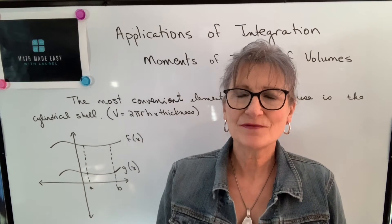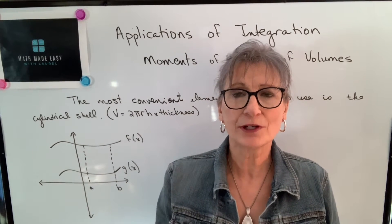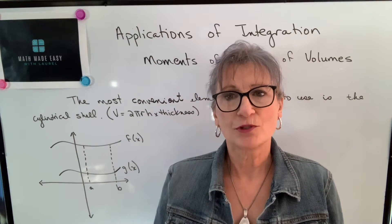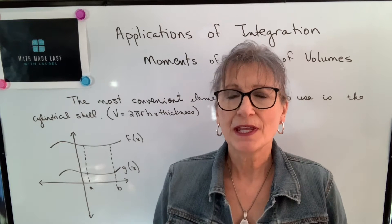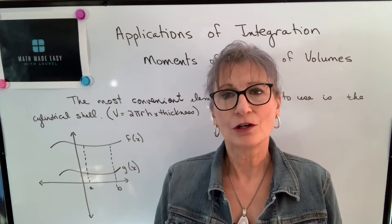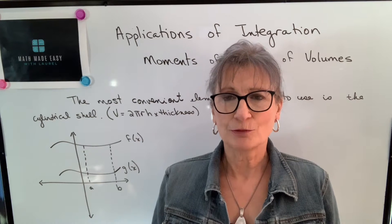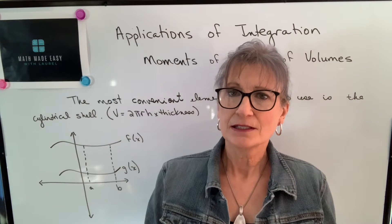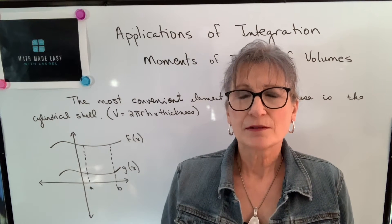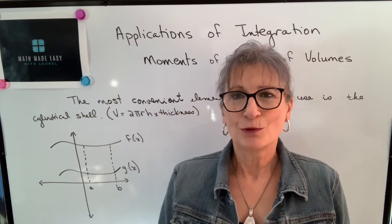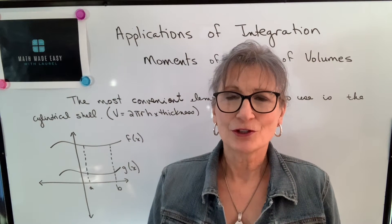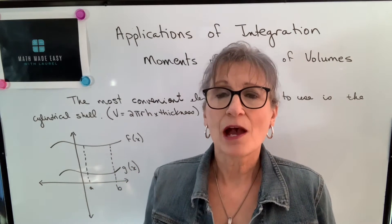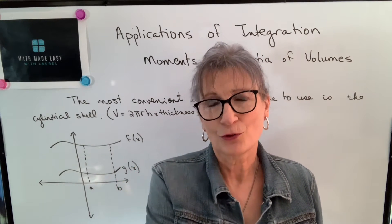In the previous video, we talked about moments of inertia with respect to areas, and we defined moments of inertia as the tendency of an object to resist a change in motion. There are formulas in place for a lot of regular shaped objects such as rectangular solids, prisms, and spheres, but any time you've got something that's irregularly shaped, you can use integration. In fact, you could use integration to come up with the formulas for all those regular shaped objects.